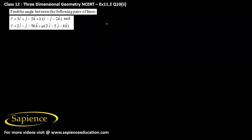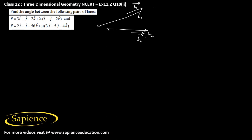Here it has been asked to find the angle between the given pairs of straight lines. The straight line L1 is parallel to some vector B1, and L2 is parallel to some vector B2. The equation of L1 is given as R vector equals A1 plus lambda B1, and the equation of L2 is given in vector form as R equals A2 plus lambda B2.